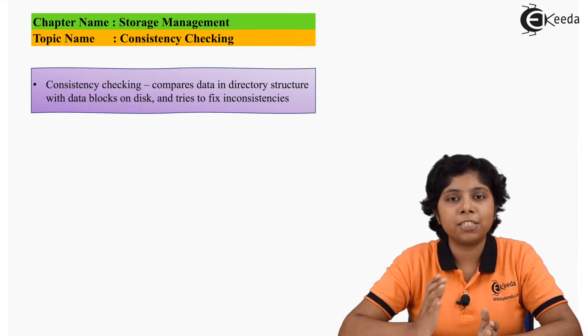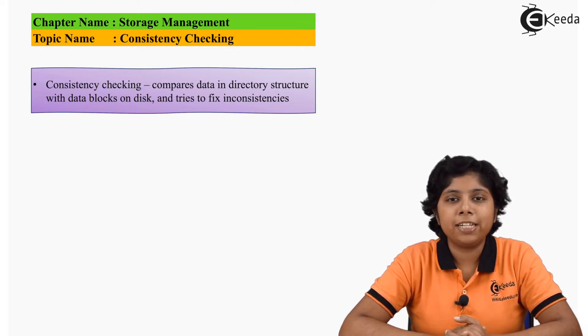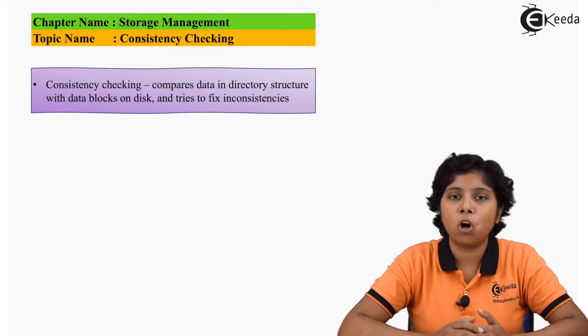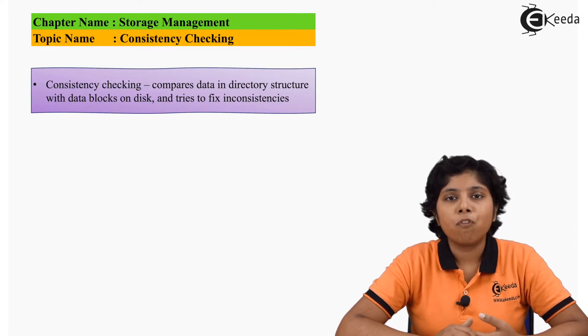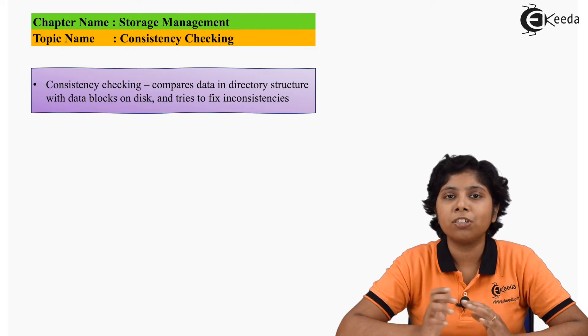So we need to take care of this inconsistency that can occur within the system. In addition to this, the bugs in the system implementation, these controllers, even user applications can cause inconsistency between the system. Now we should take care of this inconsistency and check them thoroughly before actually implementing the system. So for checking the consistency of a system, we must first scan all the metadata within a file that should be implemented on the disk and the directory.